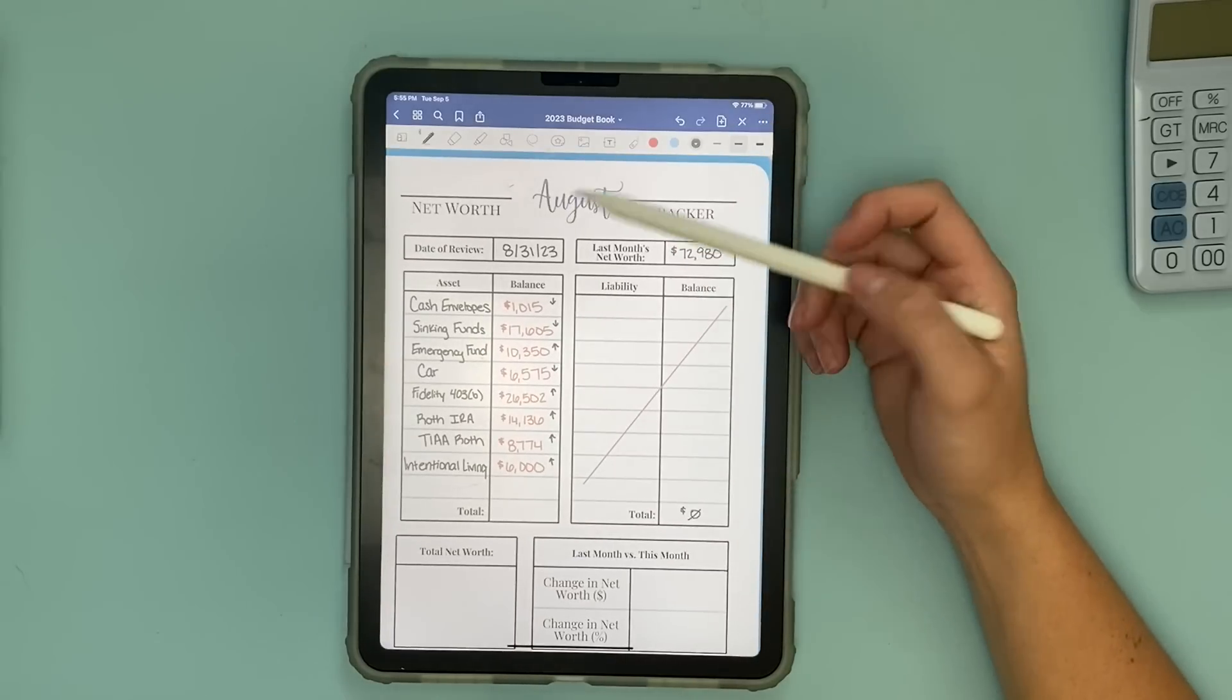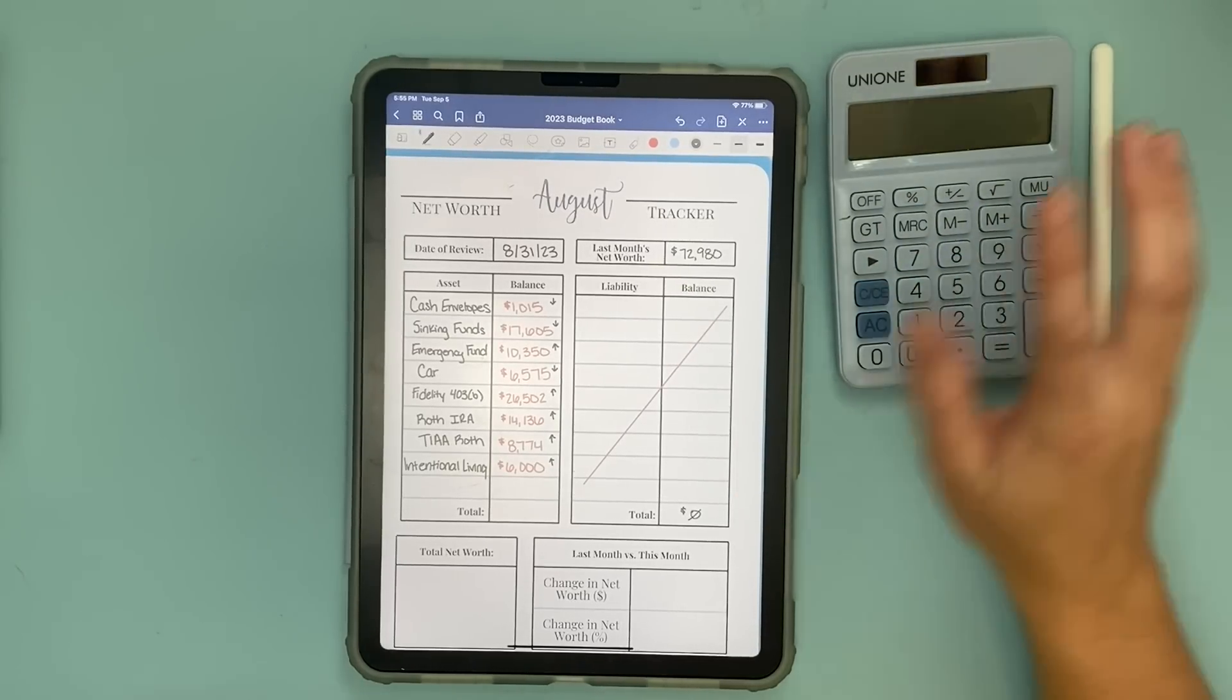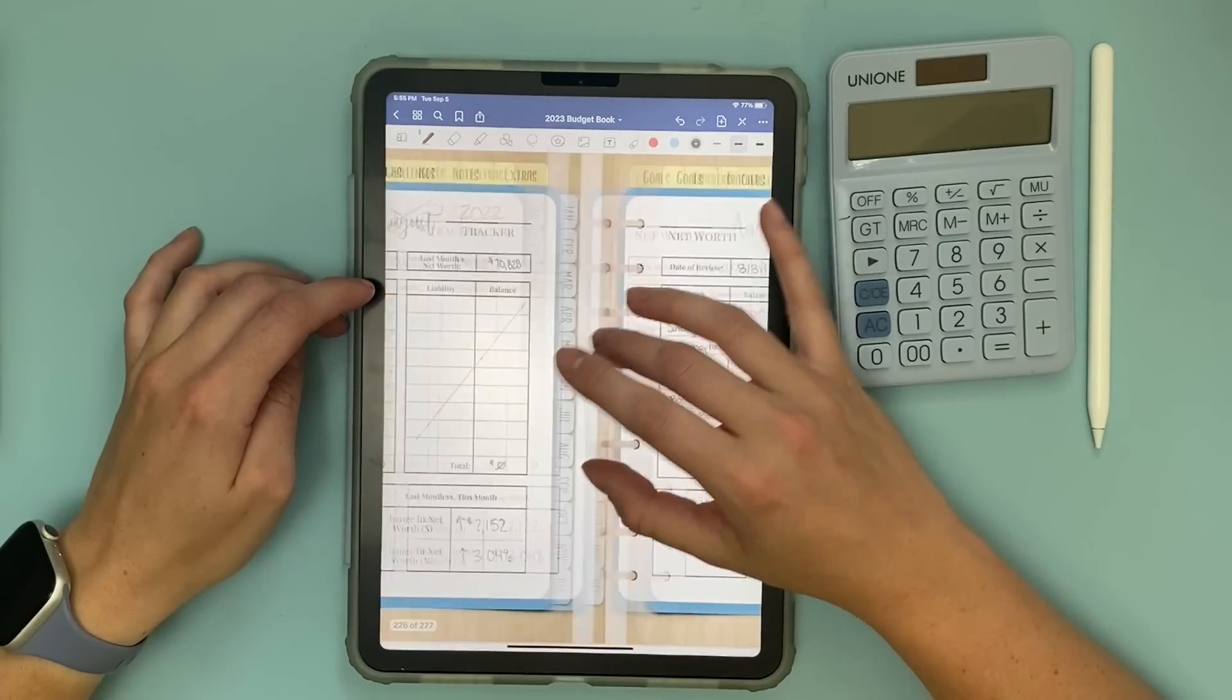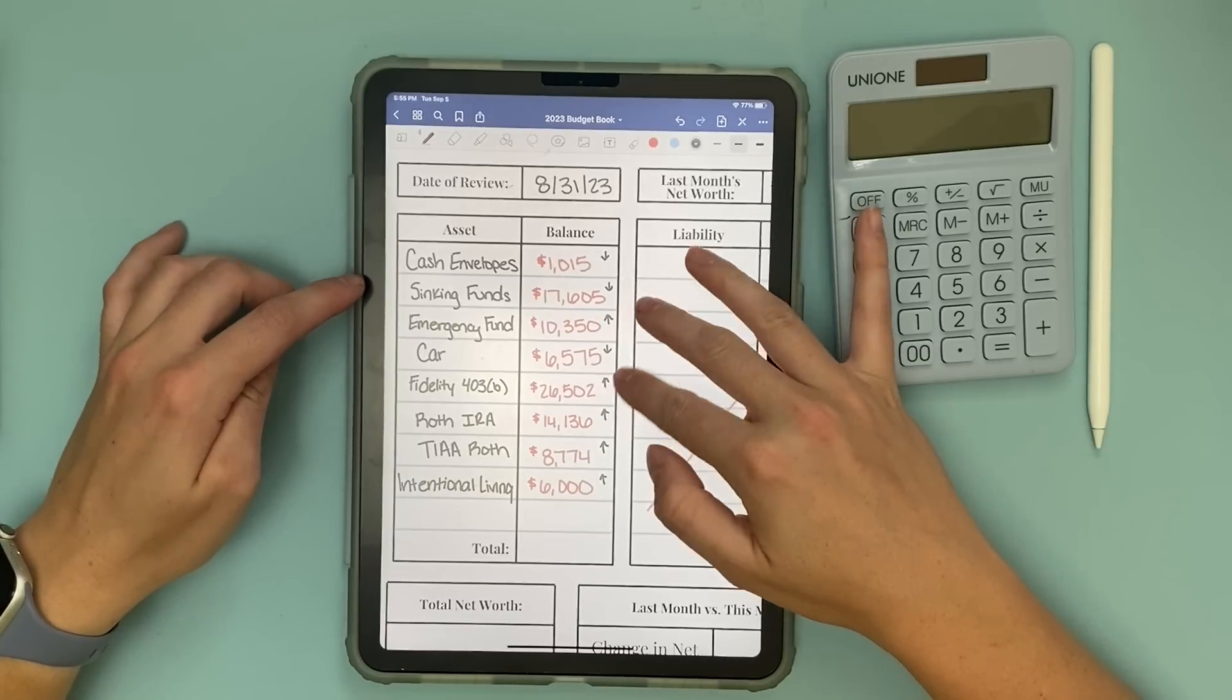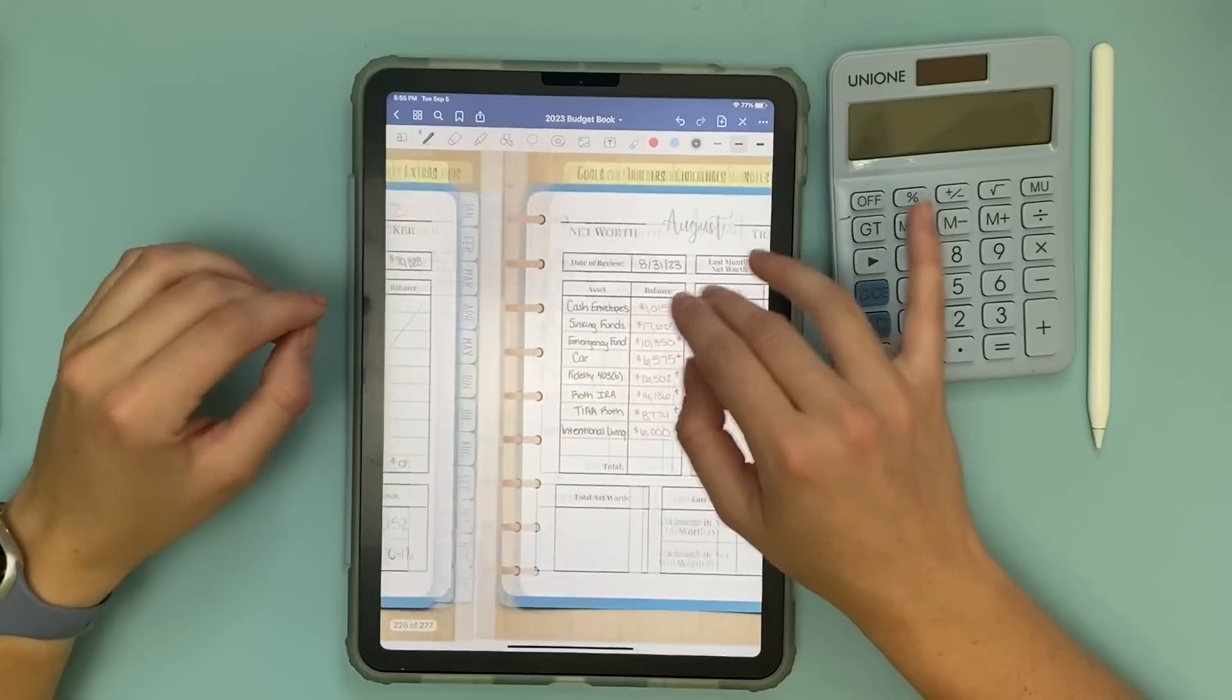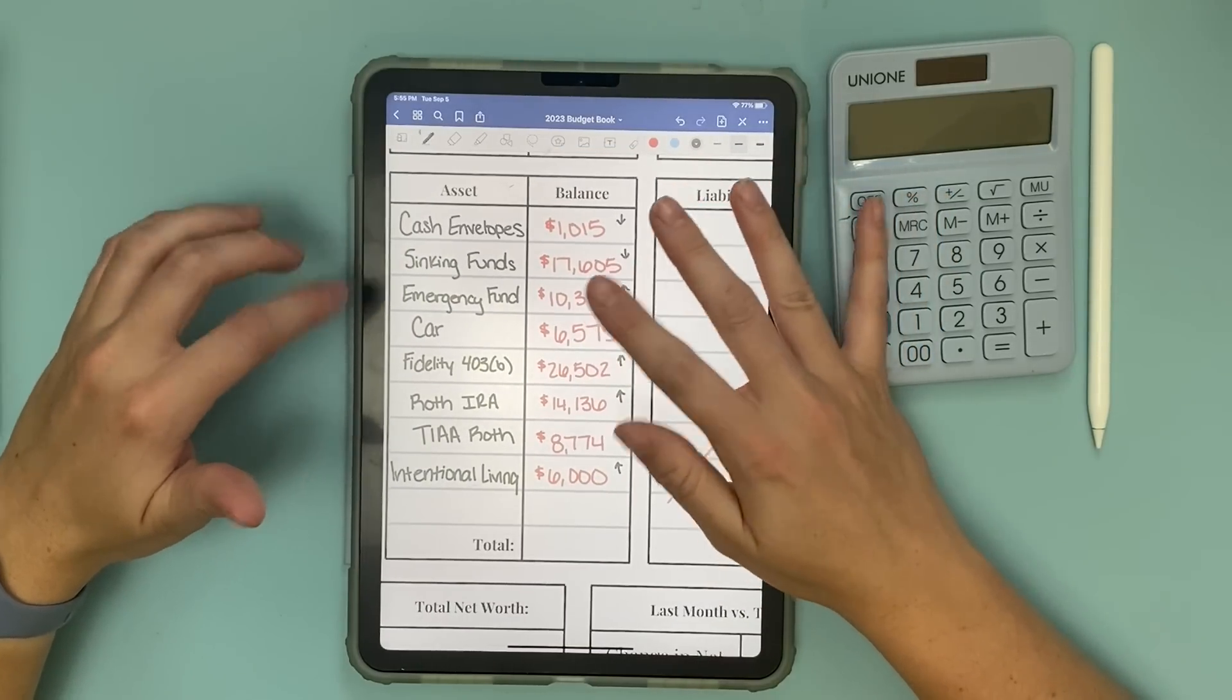For August I took these numbers down on the 31st. My cash envelopes are at $1,015 which was a decrease because they used to be at $4,000. But that's all good, I moved some sinking funds versus cash envelopes around. Sinking funds are at $17,605 which also went down because I moved some money to my emergency fund. My emergency fund went up to $10,350 which is over $5,000 of a jump. I took it out of sinking funds and put it in emergency fund.